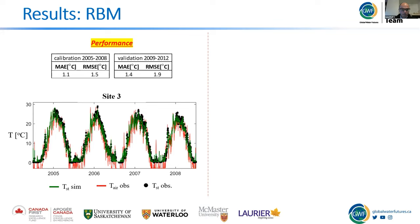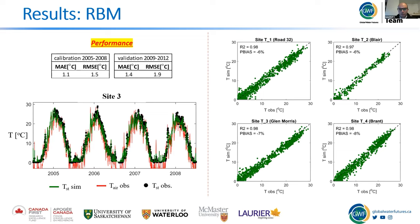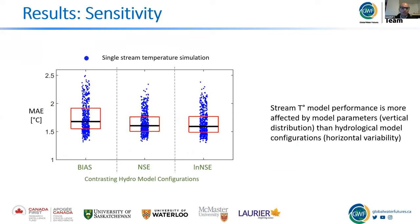Nine parameters in total were calibrated using a Monte Carlo approach with 1,500 simulations — 500 for each hydrological model configuration. An example of model performance for site three: mean absolute error of 1.1°C for calibration and 1.4°C for validation. The model can capture fairly well seasonal and daily fluctuations. Looking at the scatter plot with temperature observations on the x-axis and simulations on the y-axis, R-squared is about 0.97-0.98, and bias ranges between -6 and -8 percent, meaning the model overall underestimates temperature observations.